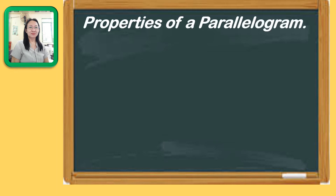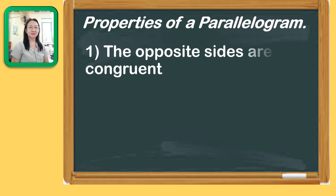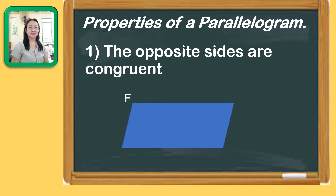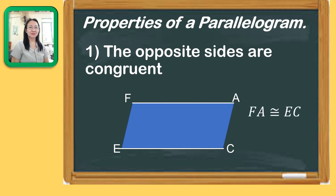Let us have a deeper understanding of a parallelogram by looking at its properties. First, the opposite sides are congruent. Let us name this parallelogram FACE. To be a parallelogram, side FA must be of equal length as side EC. In symbols, FA is congruent to EC. Similarly, FE must have the same length measure as side AC, so FE is congruent to side AC.